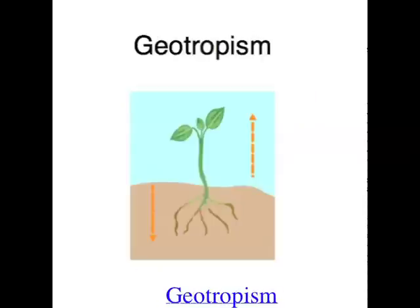Another example of a tropism in plants is geotropism — when plants grow in response to gravity. Positive geotropism is when plants grow down, so the roots of plants grow down into the ground. The stems of plants are negatively geotropic, meaning they grow away from gravity, or they grow upwards. So geotropism is a plant movement in response to gravity.